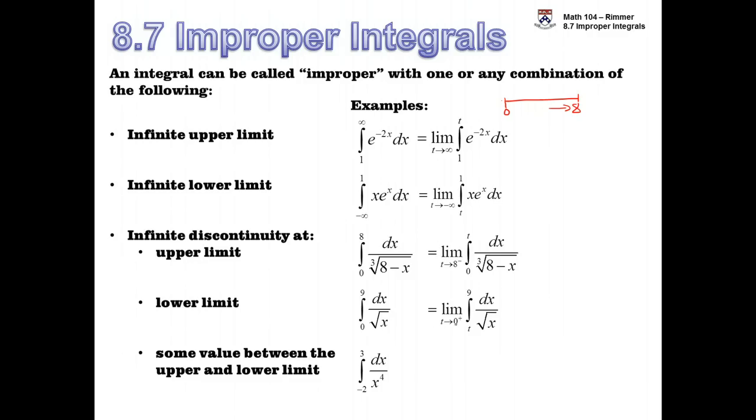And then we're approaching 0 from the right-hand side on this other integral here. We're going from 0 to 9, but 0 is the issue. So we let t approach 0, but it'll be approaching from the right-hand side.